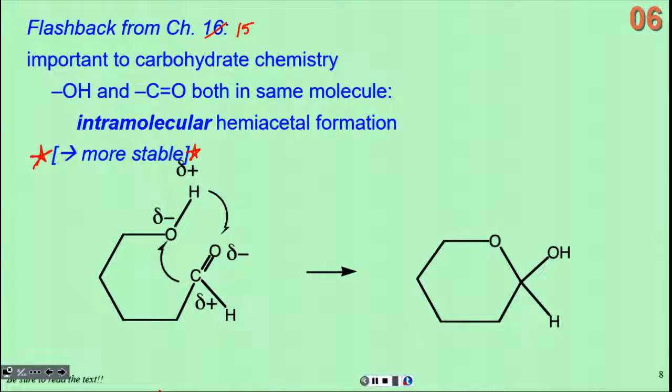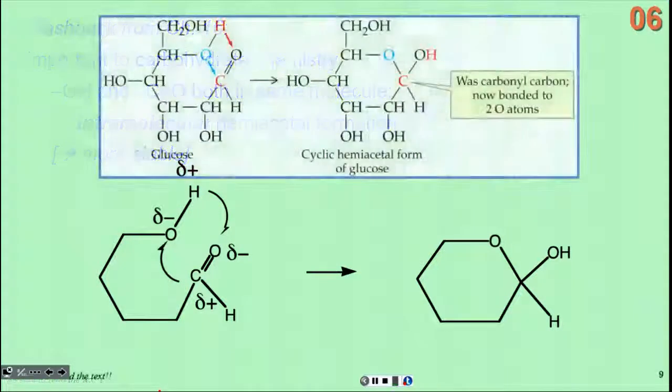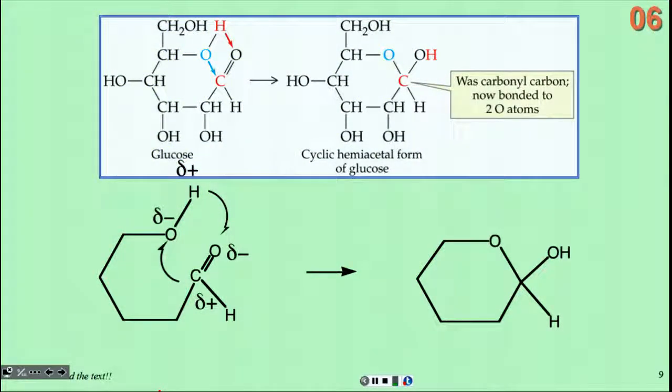They can bend around to form a hemiacetal intramolecularly, and when that occurs it is a very stable arrangement. The resulting molecule has a hemiacetal with an OH and an ether on the same carbon, and that is what we call a hemiacetal in the context of glucose.